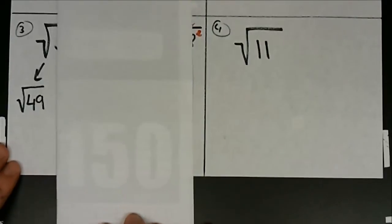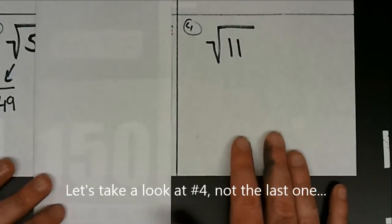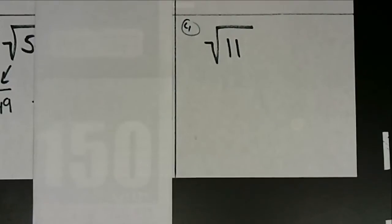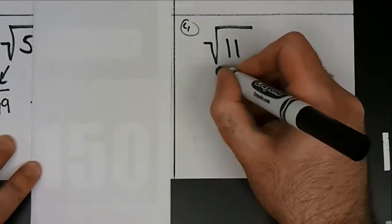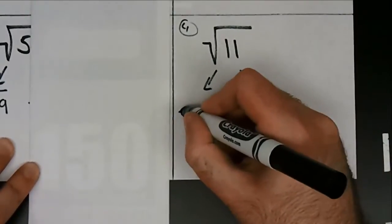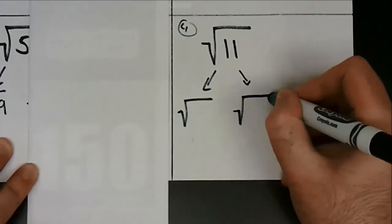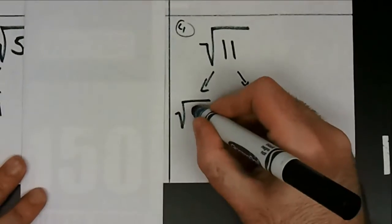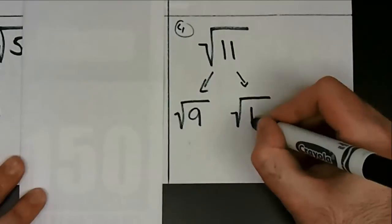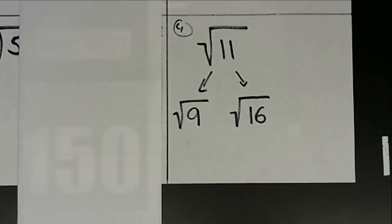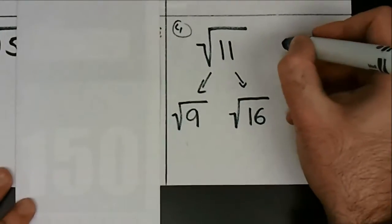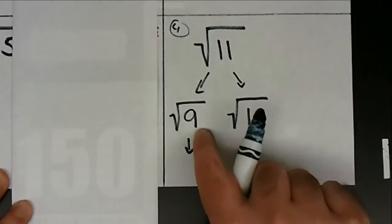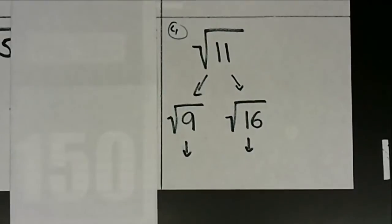Let's take a look at the last one — number 4. Is 11 a perfect square? It is not. So can someone tell me what are the two perfect squares nearest to 11, one above and one below? Right below 11, the closest one is 9, which is 3 times 3. Right above it is 16. What's the perfect square root of 9? You should be able to tell me that by now.